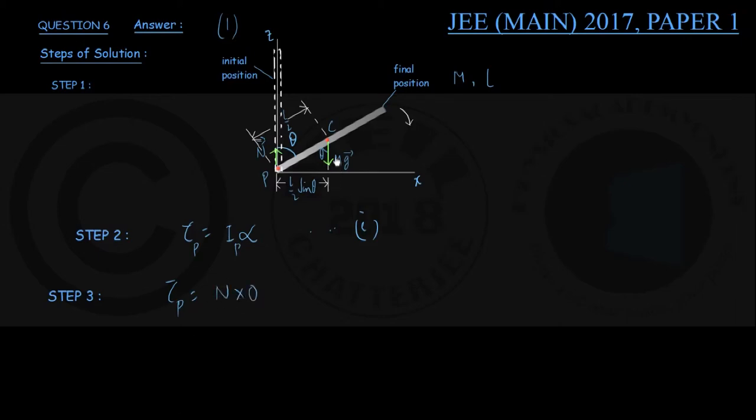And about the force Mg, its line of action is at a distance of L by 2 sin theta from this point P. So the torque of this force Mg about the point P should be the magnitude of the force Mg into the perpendicular distance from the point P on the line of action, already shown to be L by 2 sin theta. This is coming out to be M times G times L by 2 sin theta.